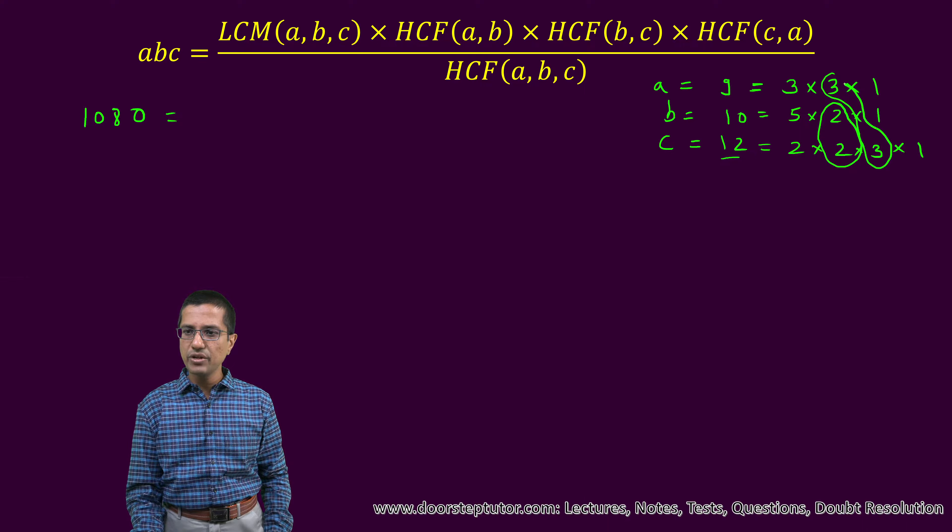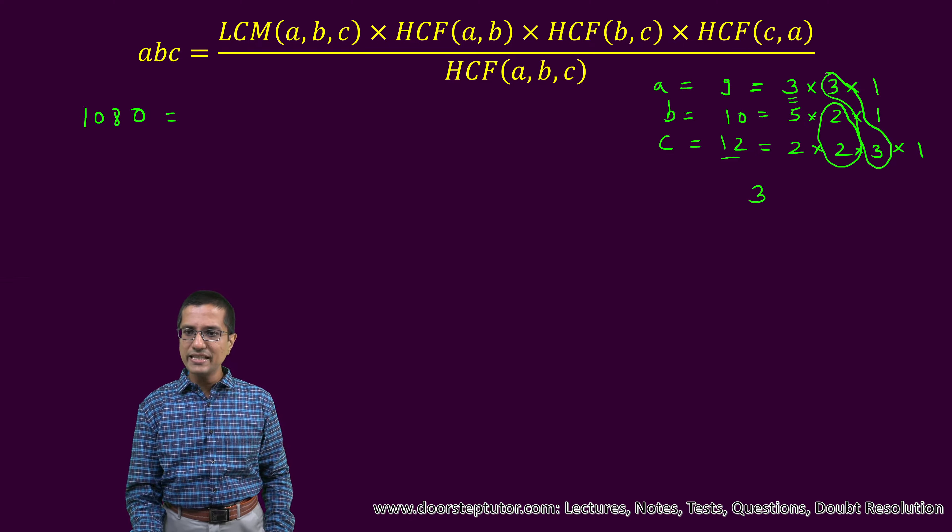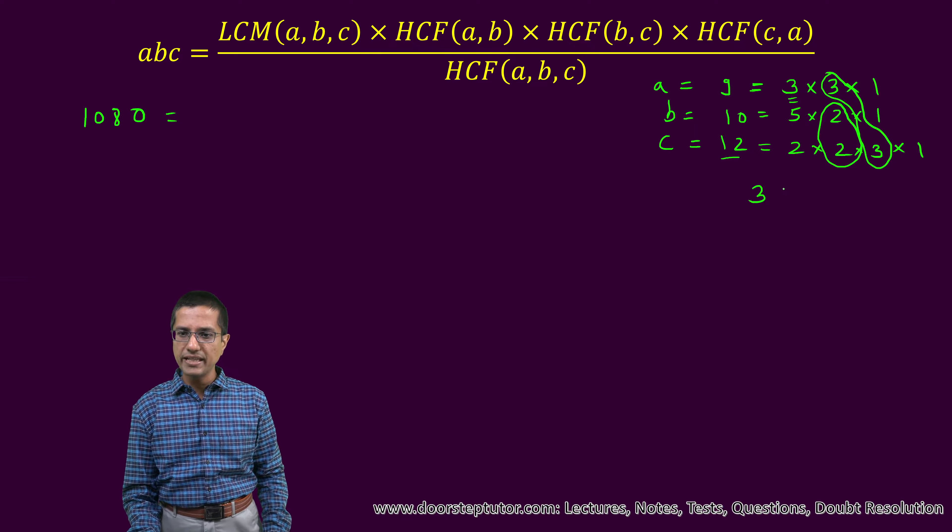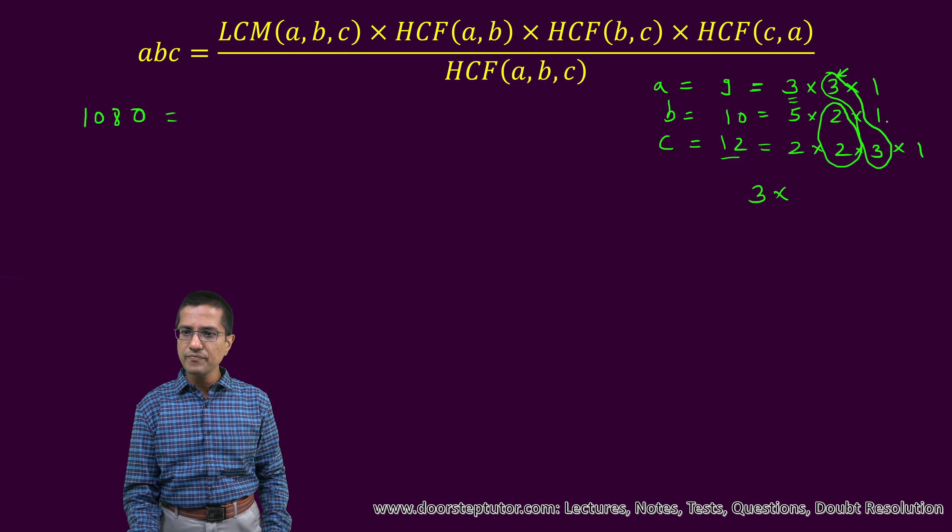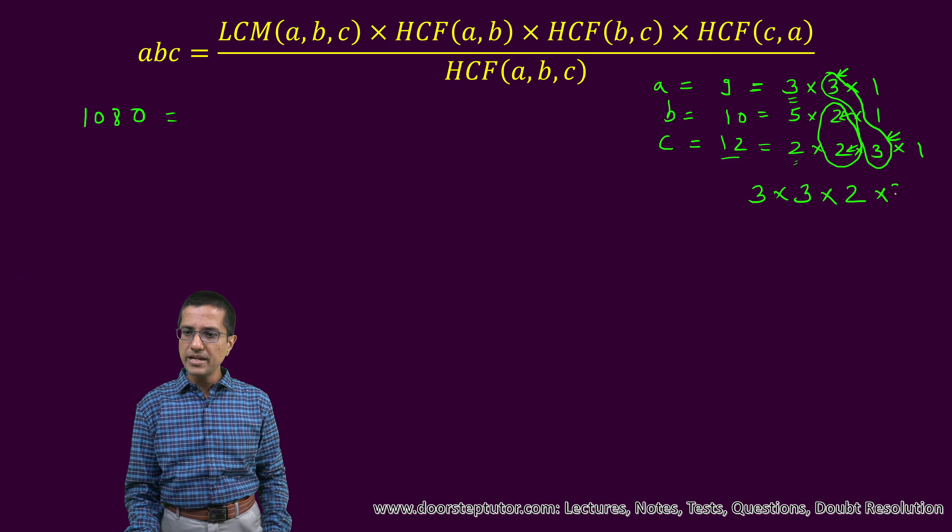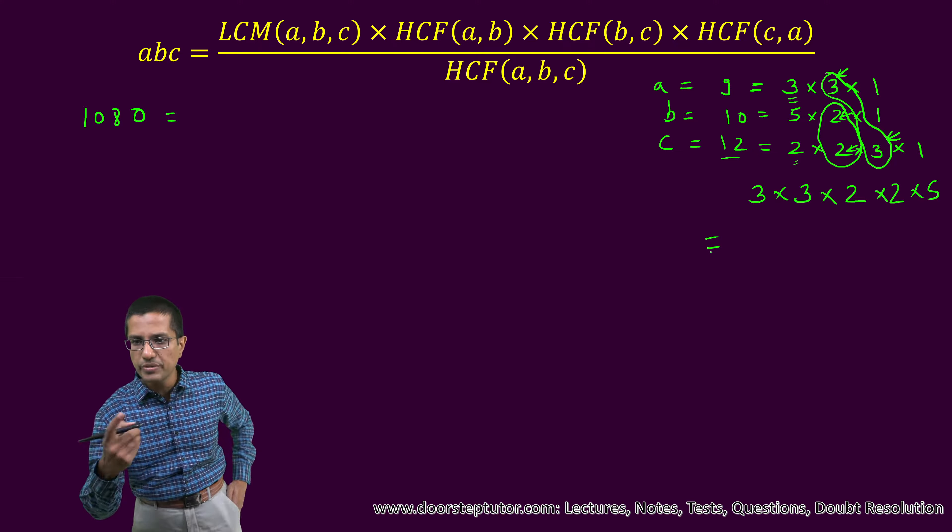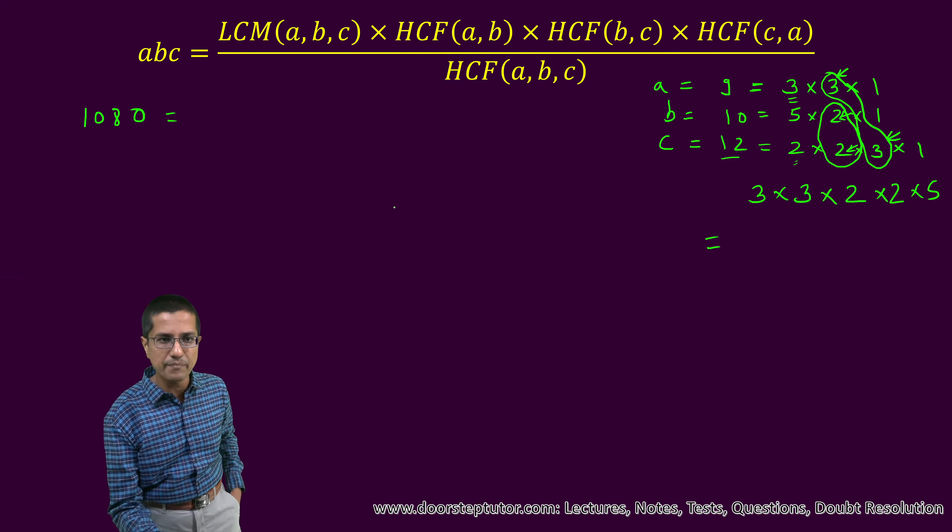So these three threes, we only will take once. This three, there is no other pairing. So we still have to take this, but out of these three, these two threes, we will take only one. Out of these two twos, we will take only one. Of course, this two remains unpaired. It is not combined with anyone. So we still have to take that. So this would be the LCM.